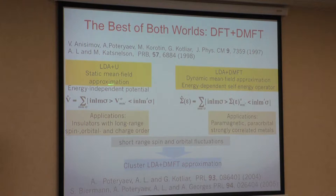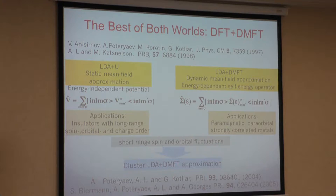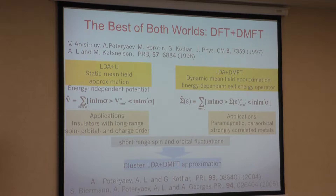There were two first attempts — from Anisimov and from our group. The principle is that we just add a local correlated potential to the density functional. The method called LDA+U was also from Vladimir Anisimov. You could view this as a static limit of DMFT — you have a static potential which works only in the correlated subspace. If you go back to all electrons, there is a complicated non-local potential, and even this was an interesting step forward.